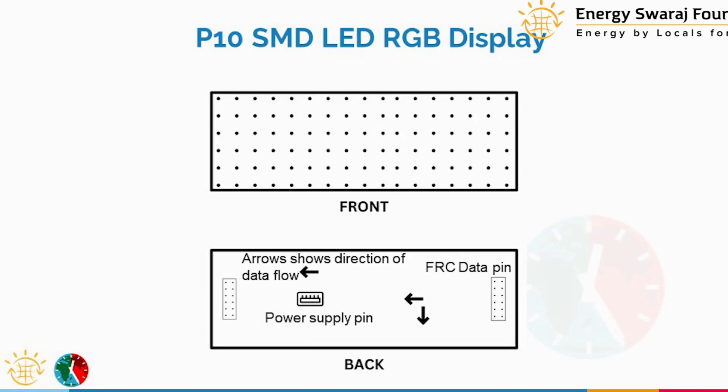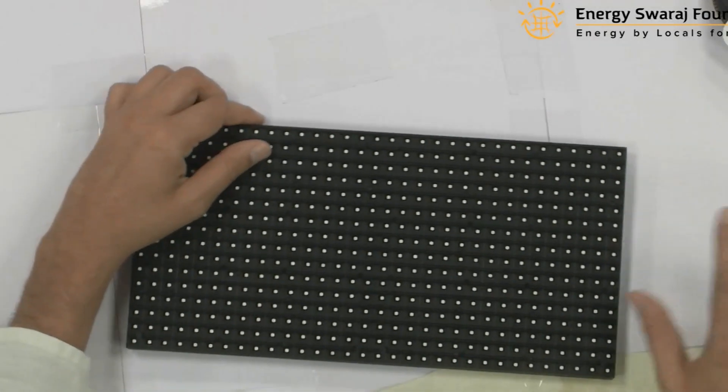The front side is all LEDs, and the back side has data connectors and a power supply point. In summary, there are three things to remember about the back side: the data pin, the power supply pin, and the arrows that show which direction data flows.